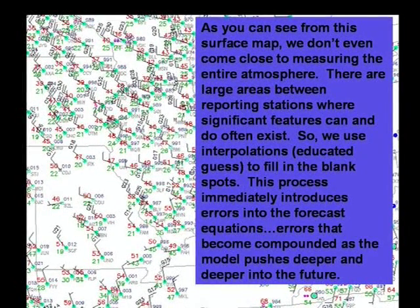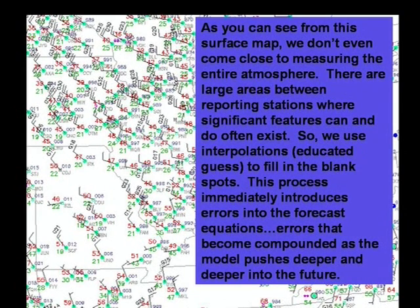Here's a perfect example of a surface chart. As you can see from the surface map, we don't even come close to measuring the entire atmosphere. There are large areas between reporting stations where big features can take place and often do. So we have to interpolate between those stations and fill in the blank spots. This process immediately introduces errors to the forecast equations.